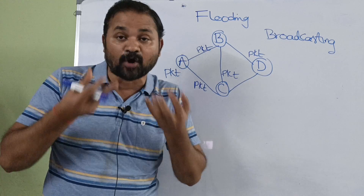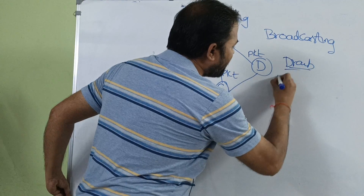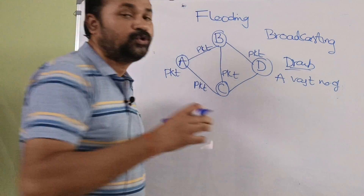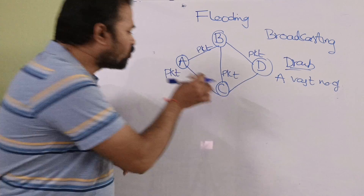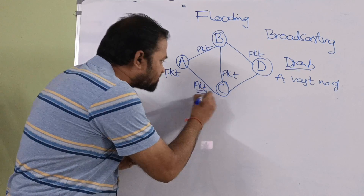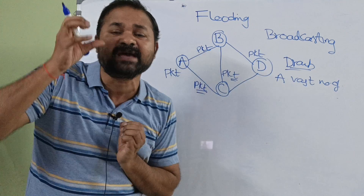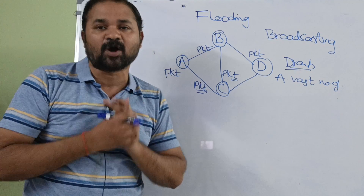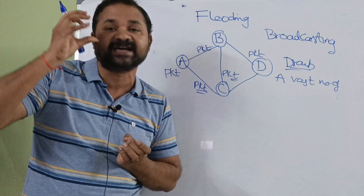Now let's see the drawback of flooding. The drawback is that a vast number of duplicate packets will be generated. If we consider router C, it receives two packets — one from A and one from B — but both packets contain the same information. So here we are getting duplicate packets, and that is the problem.